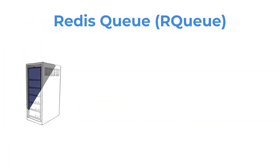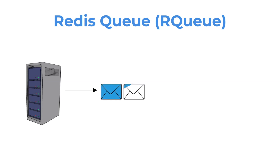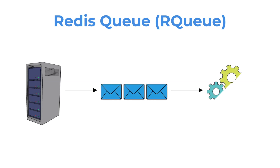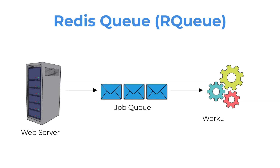Redis Queue is a simple yet powerful Python library used for queuing jobs for background processing. Since many hosting services will time out on long HTTP requests, APIs should be designed to end requests as fast as possible. Redis Queue lets us do this by pushing tasks to a queue and subsequently to a worker for processing.